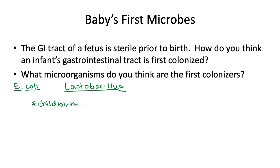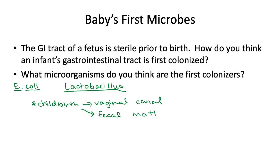During childbirth, the baby is exposed to the vaginal canal. If it's not a vaginal birth, doctors will often take swabs from the mother's vagina and place that in the baby's mouth. Not just vaginal microbes but also some fecal matter enters the newborn's GI tract — the mother will often defecate during childbirth, and that is how babies get their first E. coli.